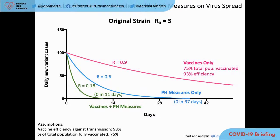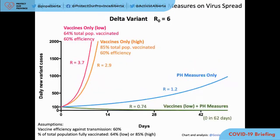Basically the pandemic could have been over in two weeks with that combination, but we didn't have vaccines back then. We let COVID spread, let it mutate and evolve, and it generated the Delta variant. Delta has an R0 around twice as high — around six. With vaccines only at 60% efficiency against transmission and 64% of total population vaccinated — currently 59% in Alberta — we would only bring R0 from 6 down to 3.7, still very strong exponential growth. Even vaccinating 85% of the total population with zero public health measures and 60% vaccine efficiency would leave an effective R of 2.9.